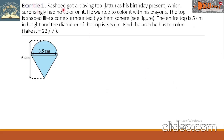Example one. Rashid got a playing top, that is Latu, as his birthday present, which surprisingly had no color on it. He wanted to color it with his crayons. The top is shaped like a cone surmounted by a hemisphere. The entire top is 5 cm in height and the diameter of the top is 3.5 cm. Find the area he has to color.